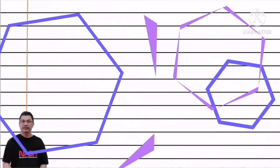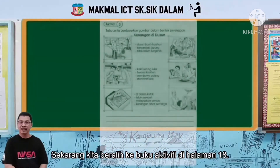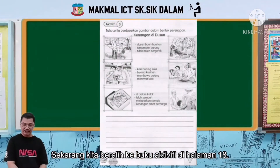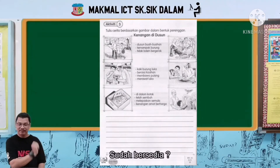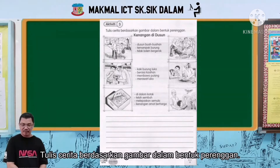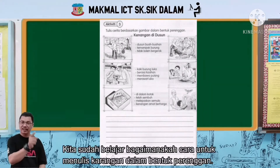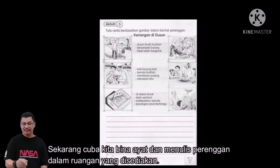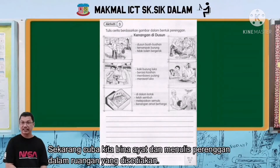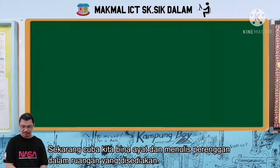Selamat menulis. Dan sekarang kita beranjak ke buku aktiviti di halaman yang ke-18. Tulis cerita berdasarkan gambar dalam bentuk perenggan. Kita sudah belajar tadi bagaimana cara nak menulis karangan dalam bentuk perenggan. Sekarang kita cuba bina ayat sendiri dan tulis perenggan sendiri di dalam ruang-ruang yang disediakan dalam buku aktiviti ini.